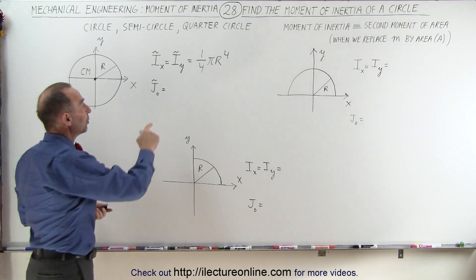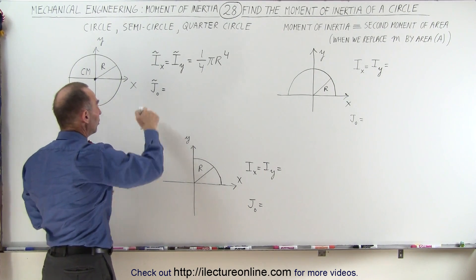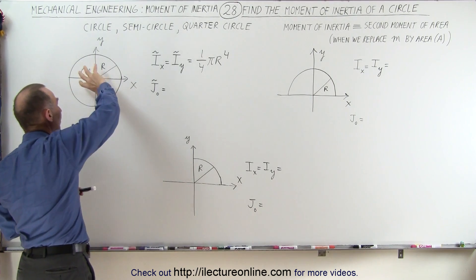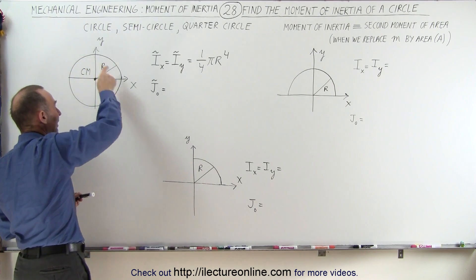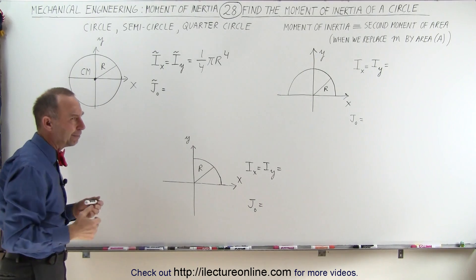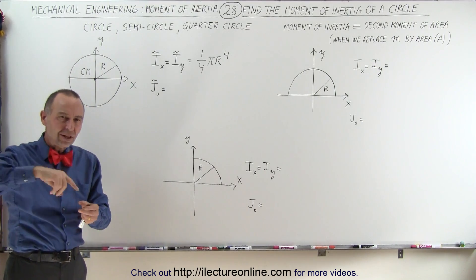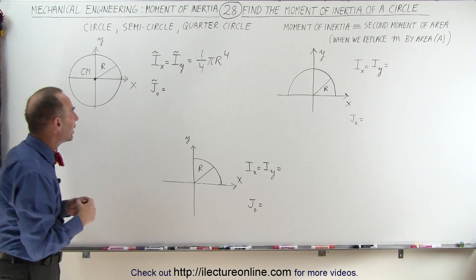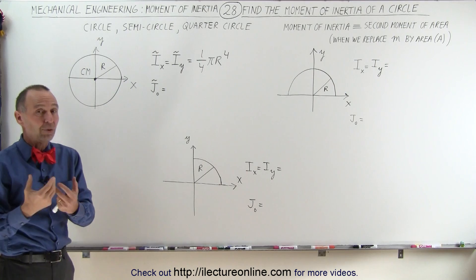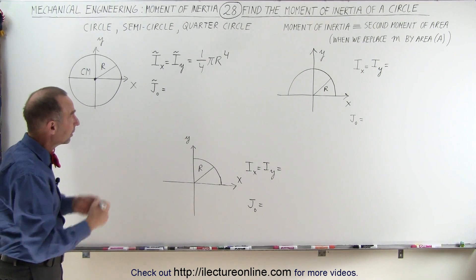Now to find the moment of inertia relative to the origin — meaning we're going to rotate the circle about the origin — that reminds us of a cylinder rotating on its axis. We should get the same result as if we find the moment of inertia of a cylinder.